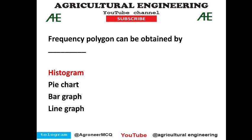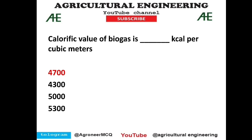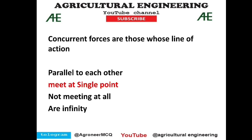A frequency polygon can be obtained from a histogram. In a poultry house, both temperature and relative humidity are important — temperature should be 22 to 25 degrees centigrade and humidity maintained in a defined range, as ammonia is liberated from deep litter, so option C is correct. The calorific value of biogas is 4700 kilocalories per cubic meter — option 1 is correct. Concurrent forces are those whose lines of action meet at a single point — option 2 is correct.